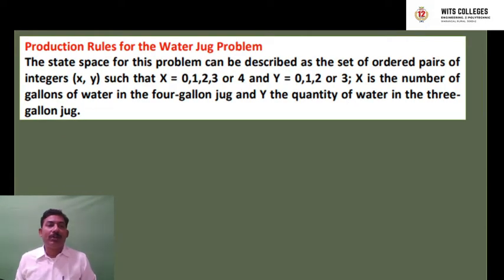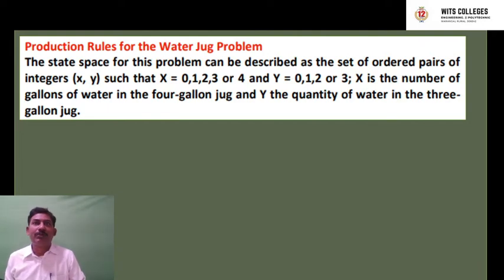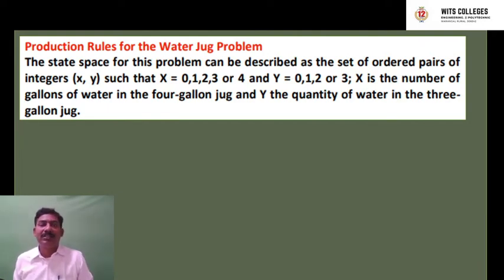The production rules for the Water Jug problem — we need to define the production rules mathematically. First we have to solve this particular problem, then give the algorithmic steps, and only then can we write a program on this problem for the Artificial Intelligence problem solution.